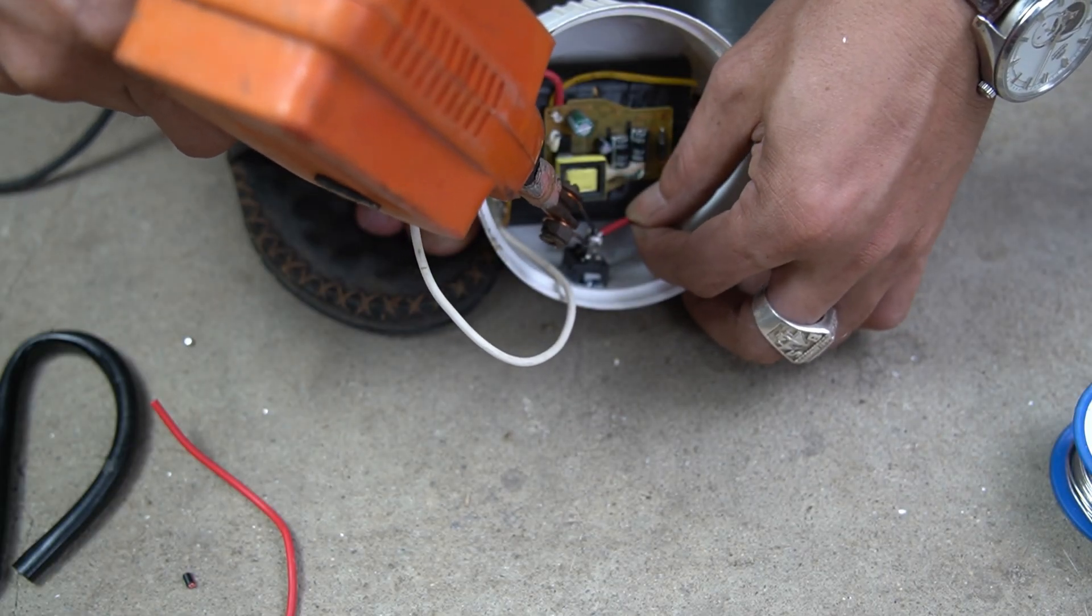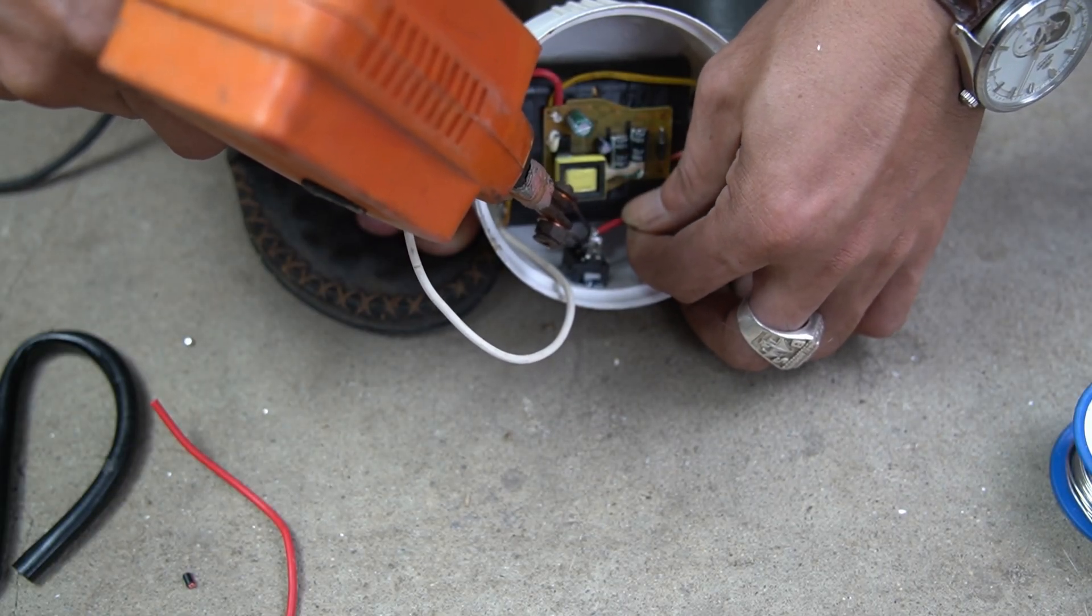Next, I solder the two pins of the switch. At the battery output end, I will connect the positive terminal and one leg of the switch.